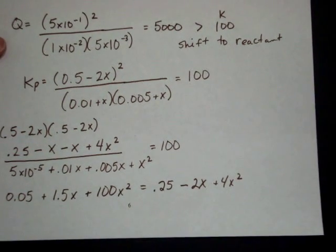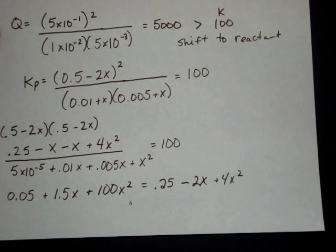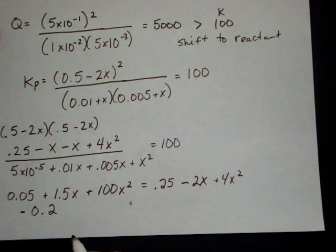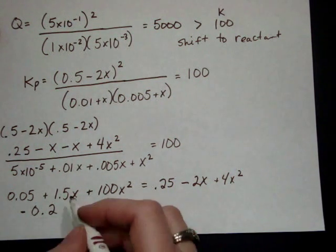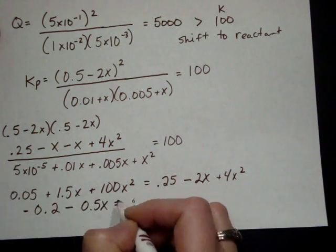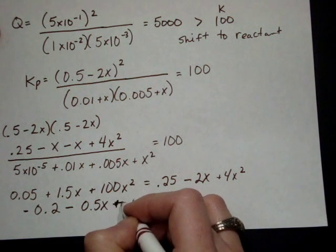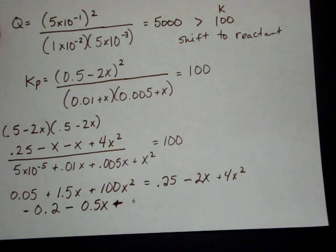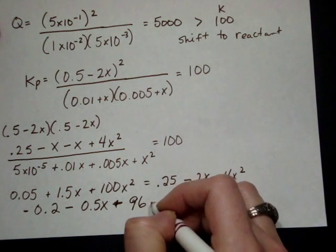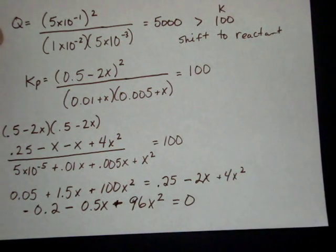Then, I can combine everything to get it ready for quadratic style. 0.05 minus 0.25 gives me negative 0.2. 1.5 minus 2x gives me minus 0.5x. And then, 100 minus 4x gives me 96x squared. And that's equal to 0.